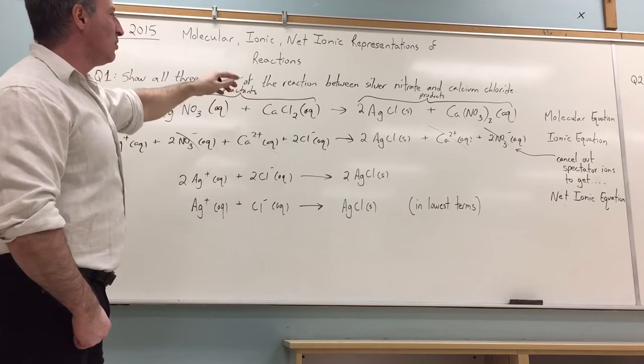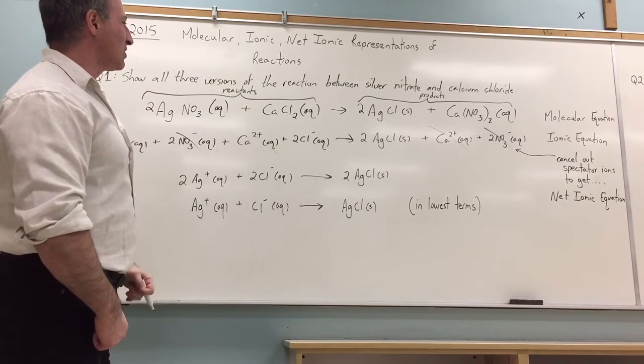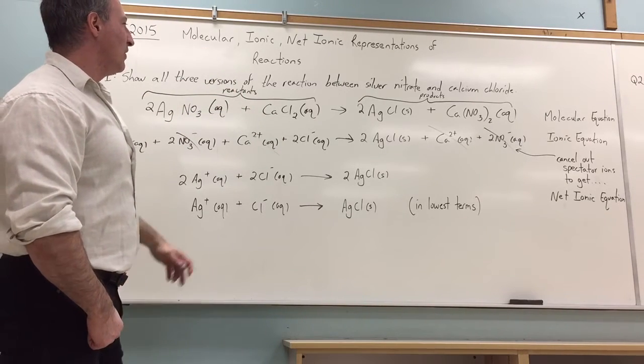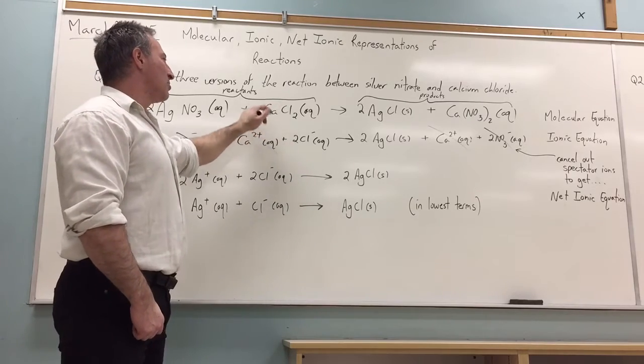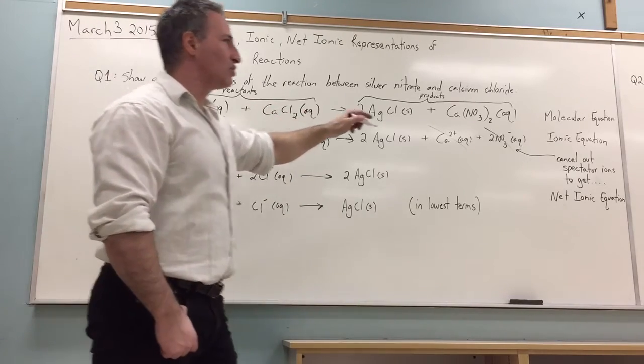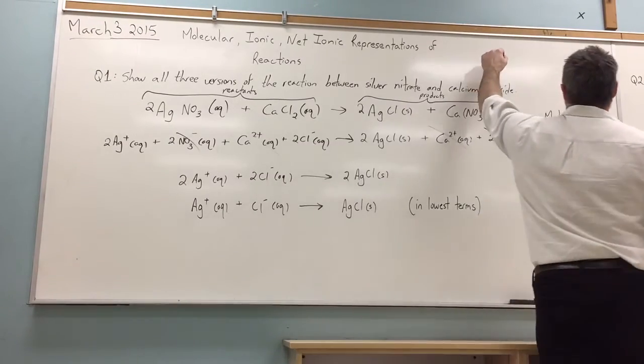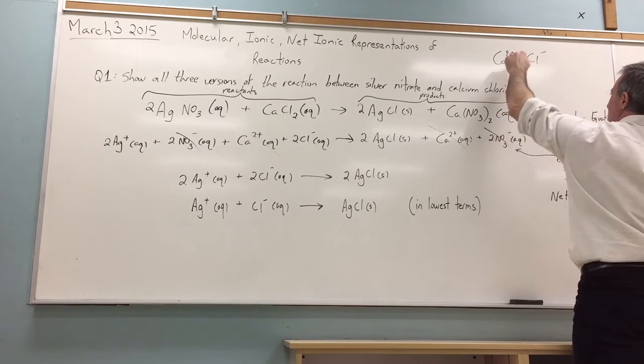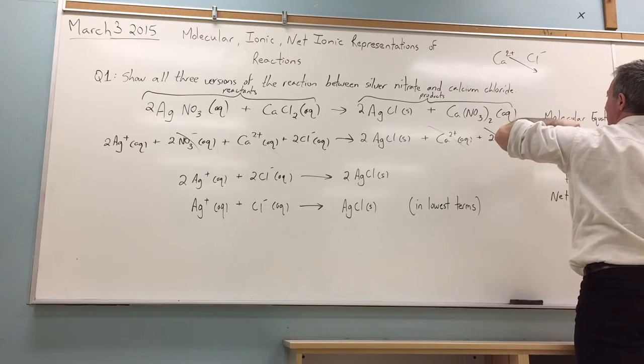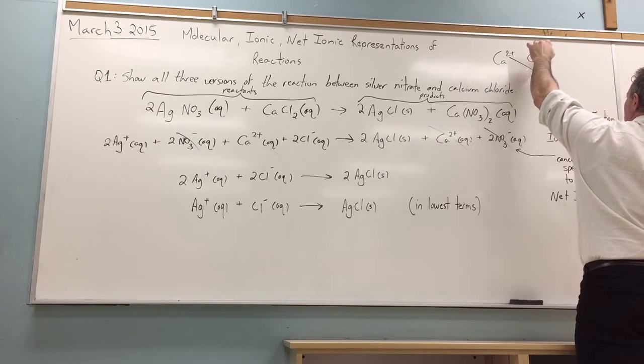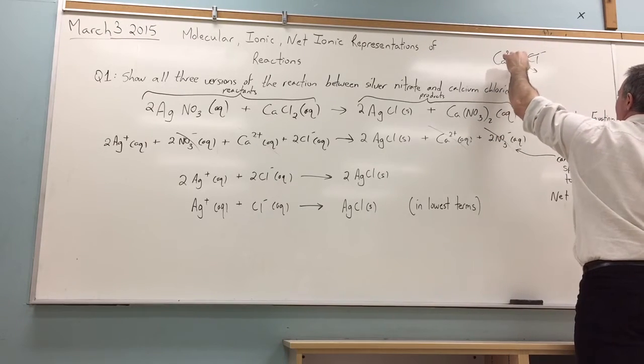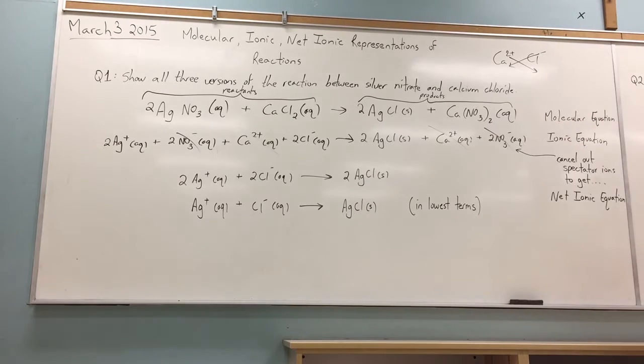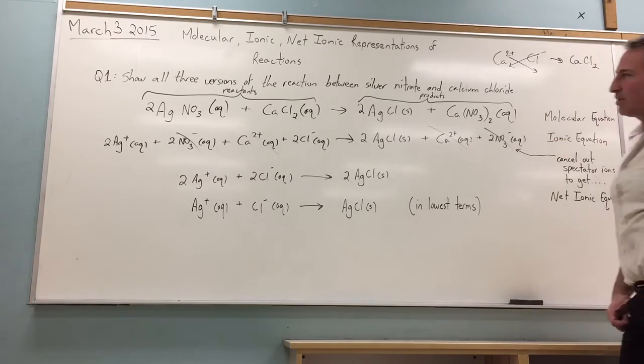So how do you combine calcium and chlorine so that you have a neutral substance with no charge? And that is by, some people like to do what's called the crossover method. You show calcium is plus two, chlorine is minus one, chloride is minus one, and the number that goes on the charge for calcium becomes the number for chlorine, or chloride sorry, and the minus one for chloride goes to calcium. So the formula is calcium chloride, there are two chlorides combined with every calcium.